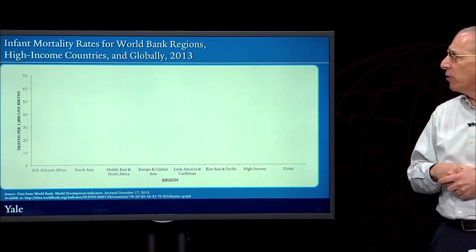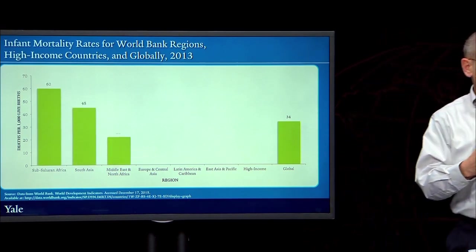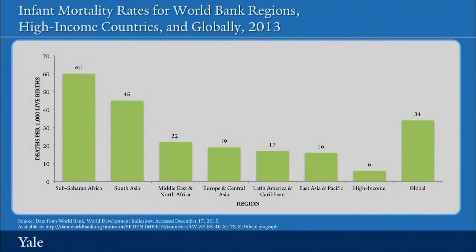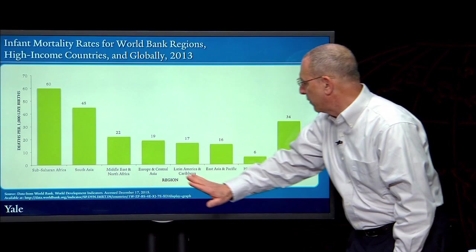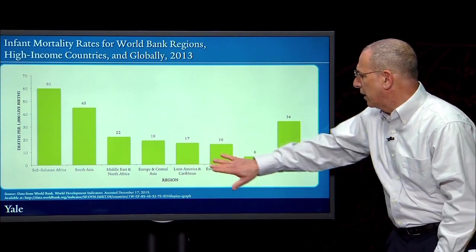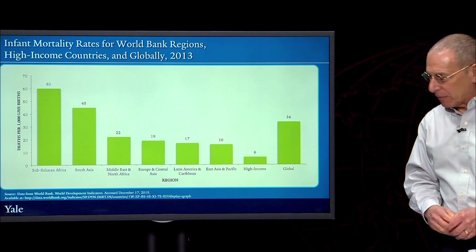Let's move on to the infant mortality rate for World Bank regions, high-income countries, and globally. Yafet, what would you take away? It follows a very similar trend — high-income countries have significantly lower infant mortality than sub-Saharan Africa and South Asia. Other regions are somewhere in between, with the Middle East and North Africa almost four times, and Europe and Central Asia more than three times the rate in high-income countries.